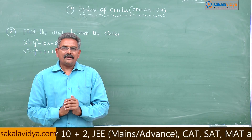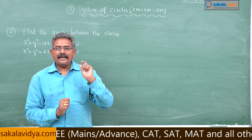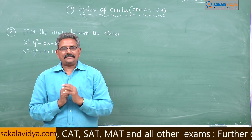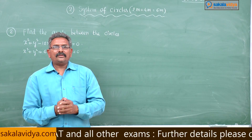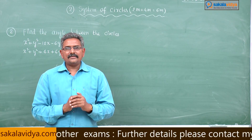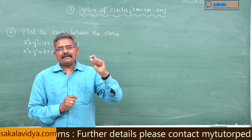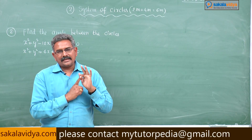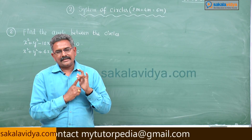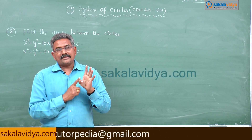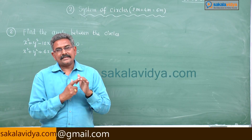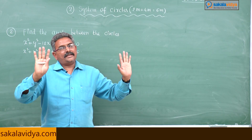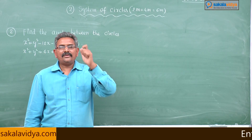In order to find out the angle between the two circles, the minimum required data is: the center of the first circle, the center of the second circle, the radius of the first circle, the radius of the second circle, and the distance between their centers. That is enough — then we can find out using the formula.